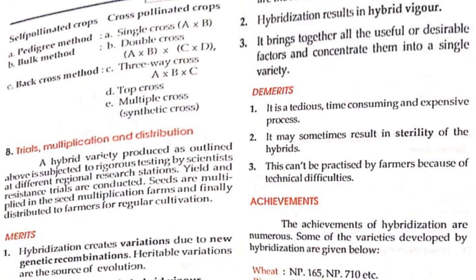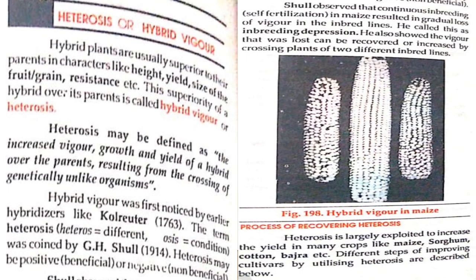Demerits: it is a tedious, time-consuming, and expensive process. It may sometimes result in sterility of the hybrids. It cannot be practiced by farmers because of the technical difficulties. Achievements: examples of hybrids are wheat NP 165 and NP 710, etc.